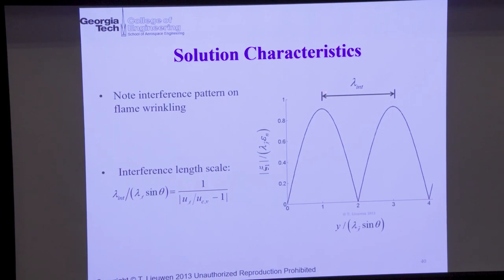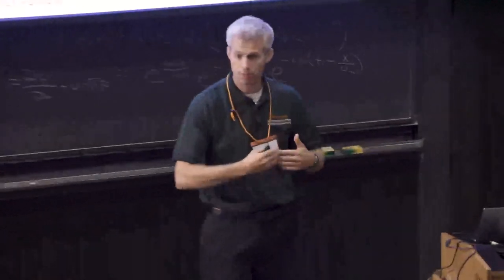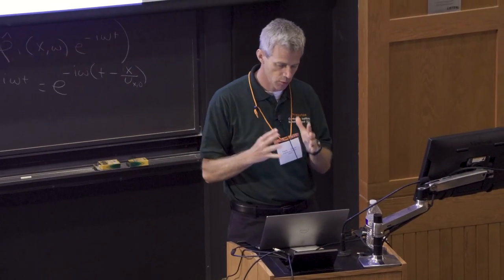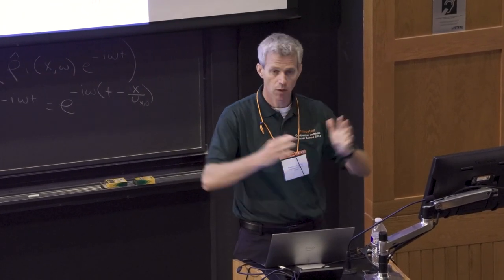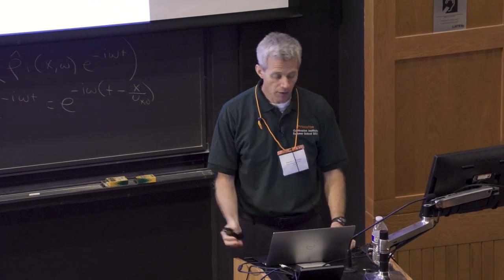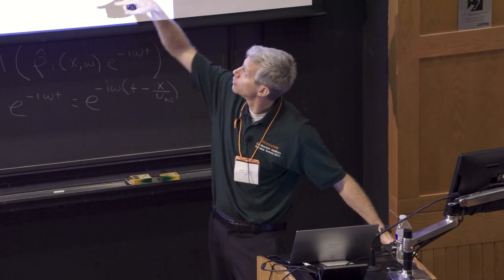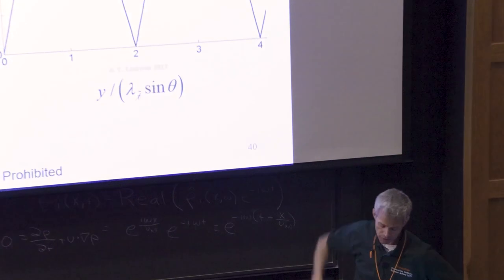The other thing you can see is that you get this interference length scale. That interference length scale arises because the vortex exciting the flame and the speed with which flame wrinkles propagate is not the same. The more different those two speeds are, the shorter this wavelength will be. The closer those two speeds are, the longer this will be. In the limit where the vortex is moving at the exact same speed, you get no interference — this thing would just go up, reach a peak, and stay at constant amplitude.